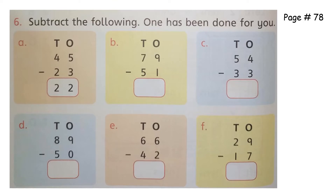Now we have to subtract these numbers. The first one is already done so let's do the second one. We have to subtract one from nine, so we will draw nine lines: one, two, three, four, five, six, seven, eight, nine. We have to subtract one, so we will cut one line. Count the lines which are left: one, two, three, four, five, six, seven, eight — so we will write eight.